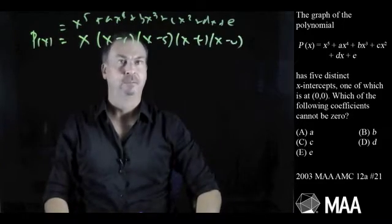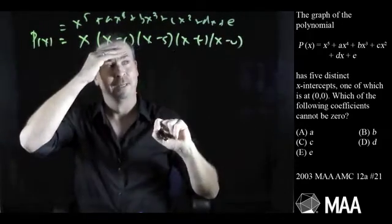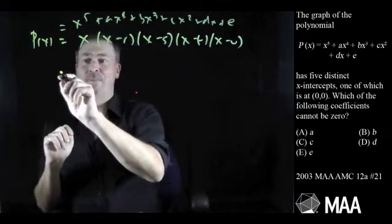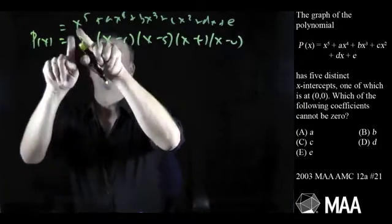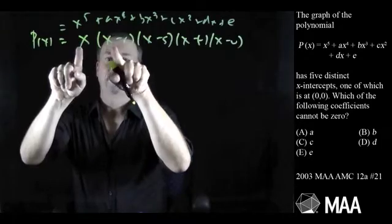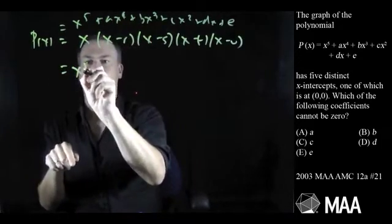How much further can I go? Well, I suppose I could expand this out. Seems a little scary, but maybe I can do it. Like, for example, the coefficient of x to the fifth. I'll get x times, I have to choose x and x and x and x. That really will be x to the fifth.